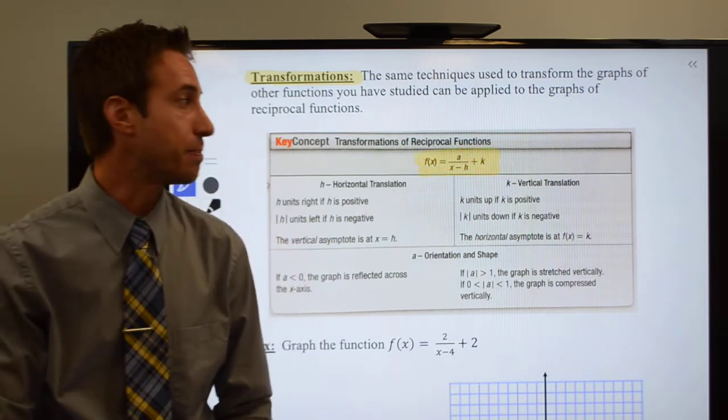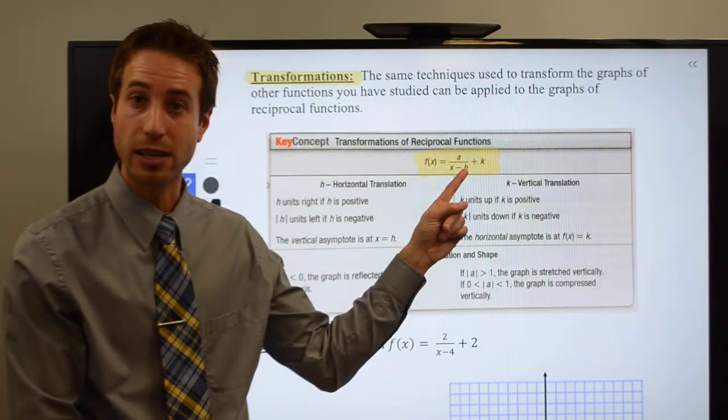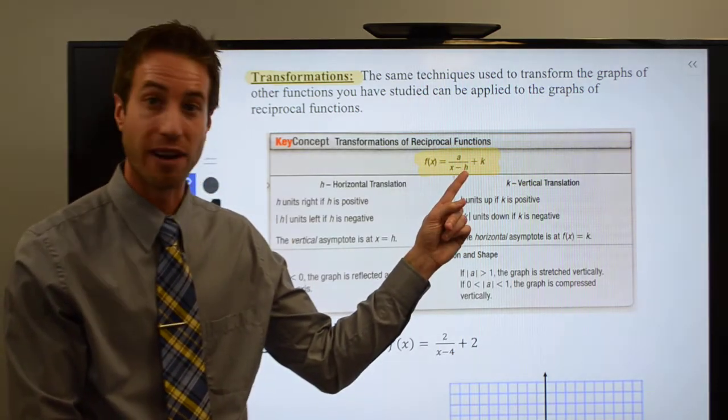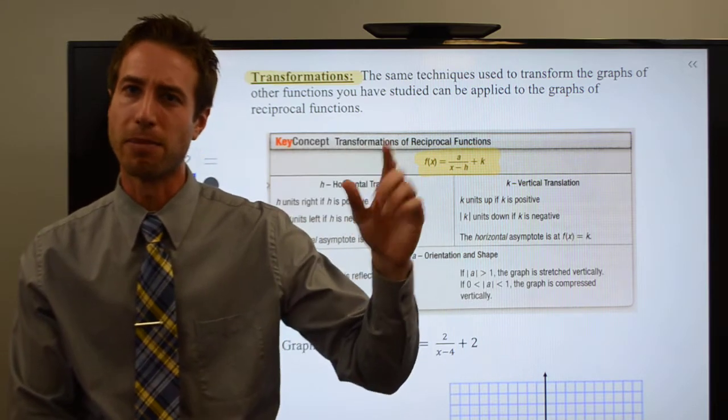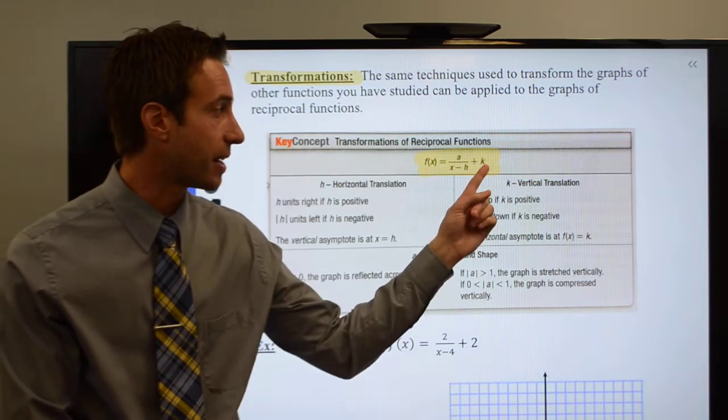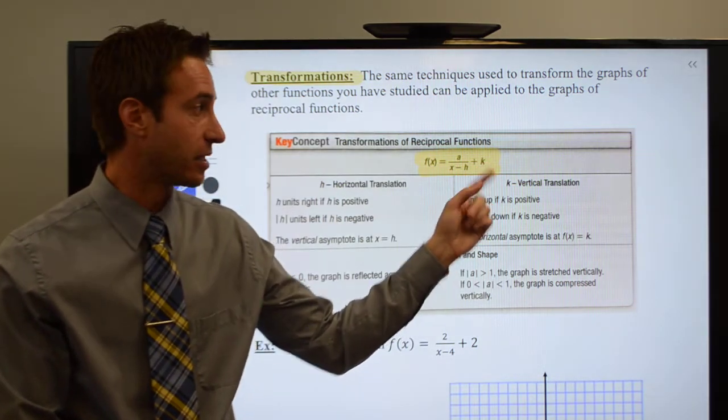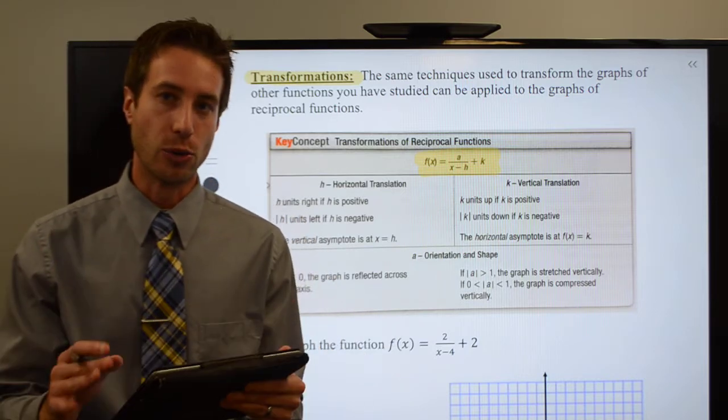Before we do that though, I just want to confirm something that we think we discovered on the previous page. When it comes to transformations, that is A, H, and K, the general formula for the reciprocal function is this guy right here. We were pretty sure the H needed to be in the denominator with the X, and the K was some number plus or minus tacked on to the end of the reciprocal function.